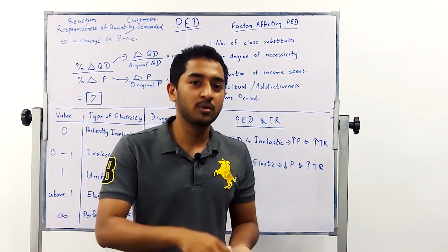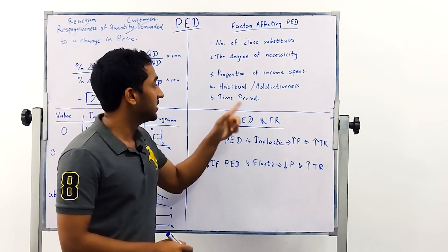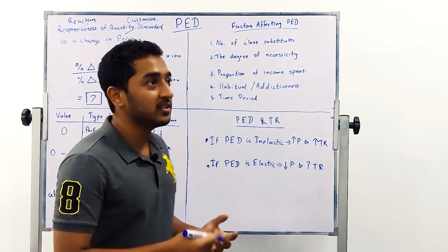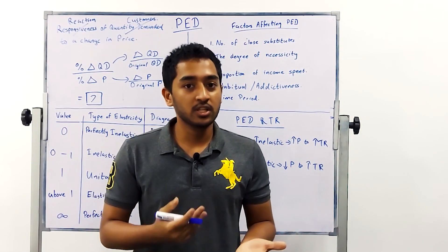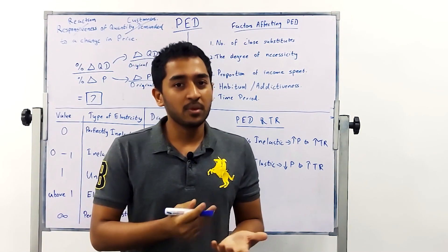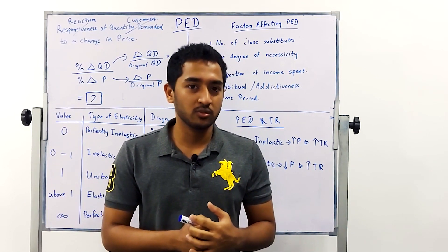The next type is habitual or addictiveness. Now addictiveness can be products like cigarettes. Again you will continue to buy despite the price rises. Maybe a small proportion will leave you but otherwise most of them will continue to buy.